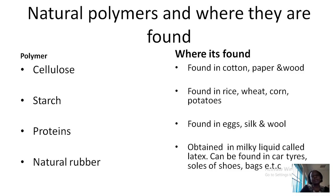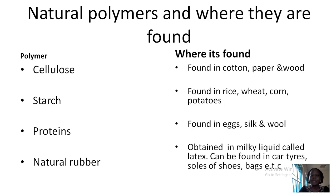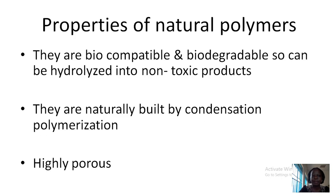We can also further classify the natural polymers depending on where they are from. For example, the polymer cellulose is found in cotton, pepper and wood. The starch is found in rice, wheat, corn and then potatoes. Proteins can be found in eggs, silk and wool. You can also find natural rubber, which is obtained as a milky liquid called latex and is used to make car tires, shoe soles and barks.